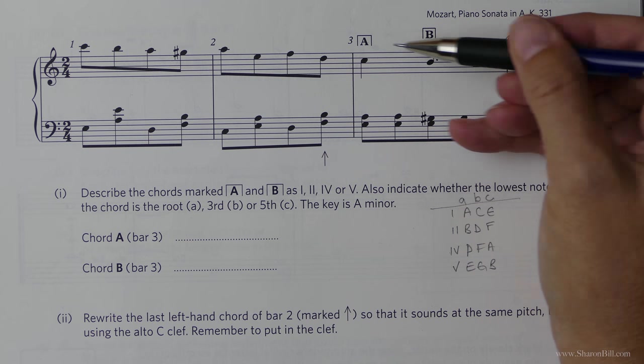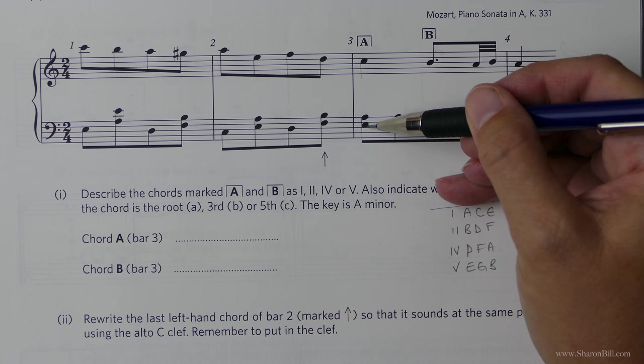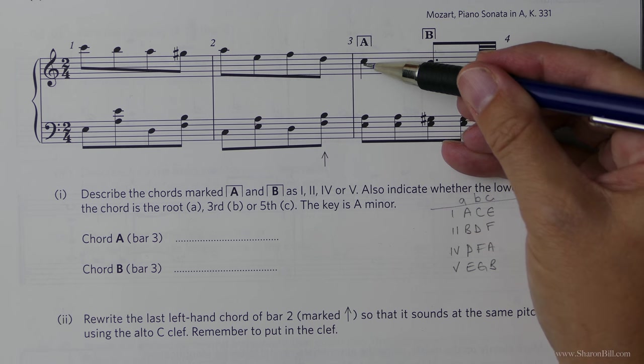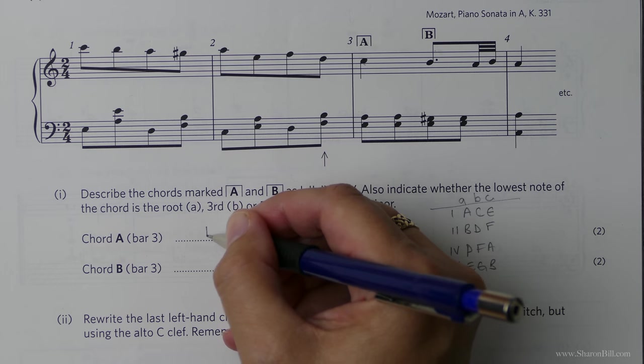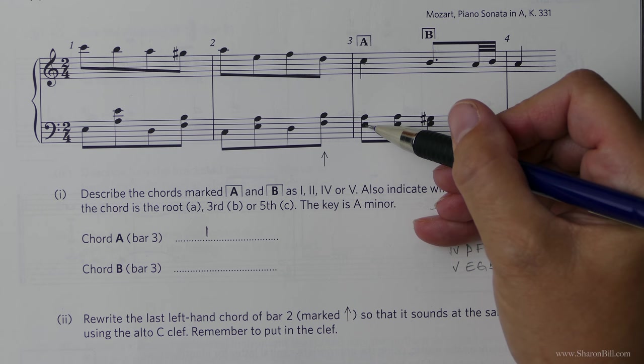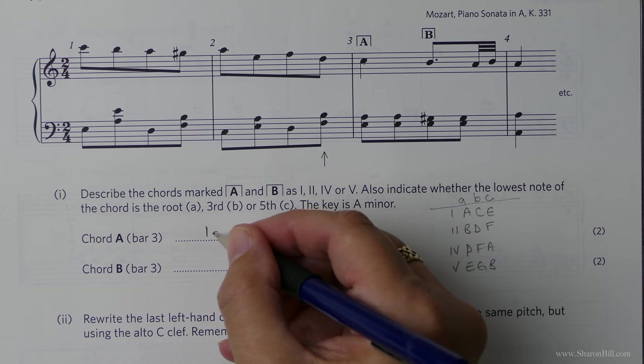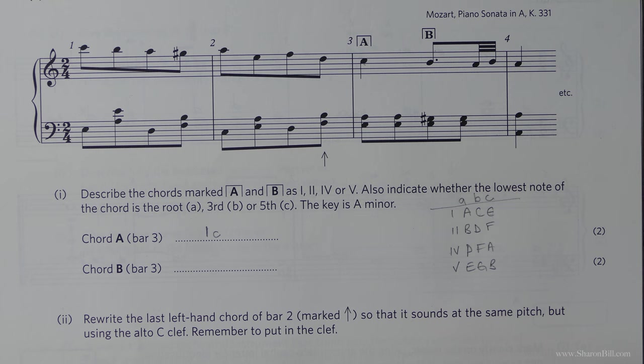And so now we can just go ahead and answer the question. So we need to describe chords A and B. So chord A has got an E, A and a C in it. So that's chord one. That's the first part of that question answered. And then we can see that we've got an E in the bass. The lowest note is an E. So that's a one C. There we go.